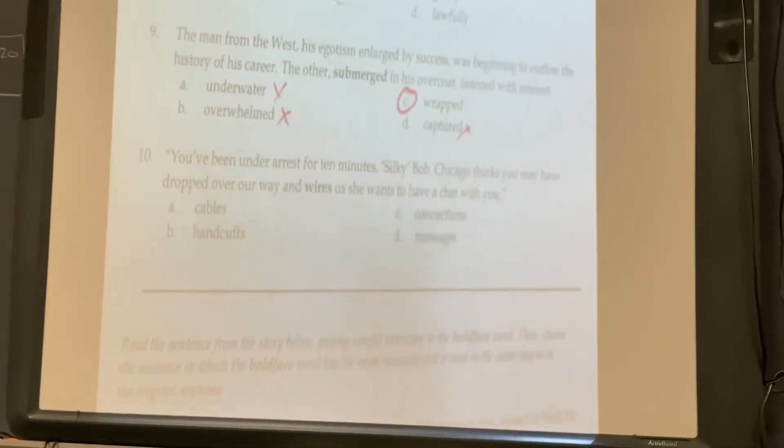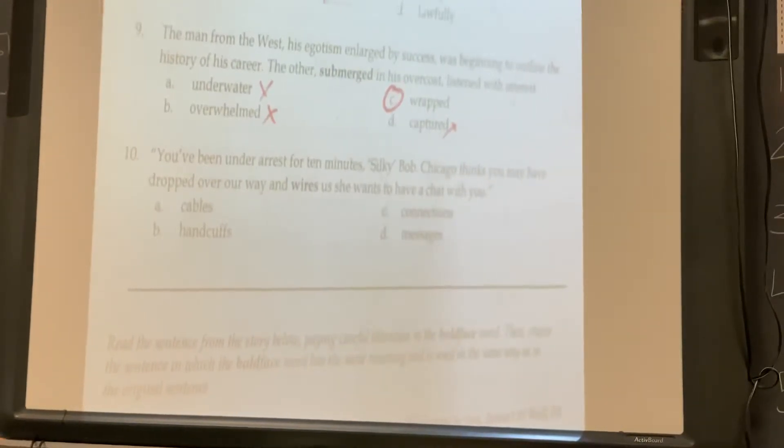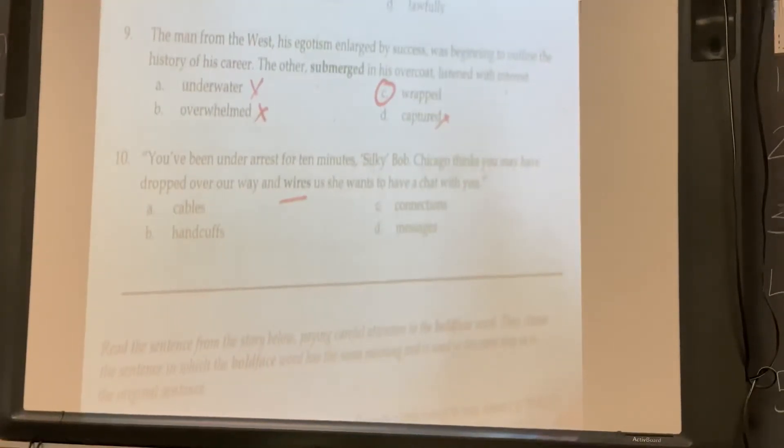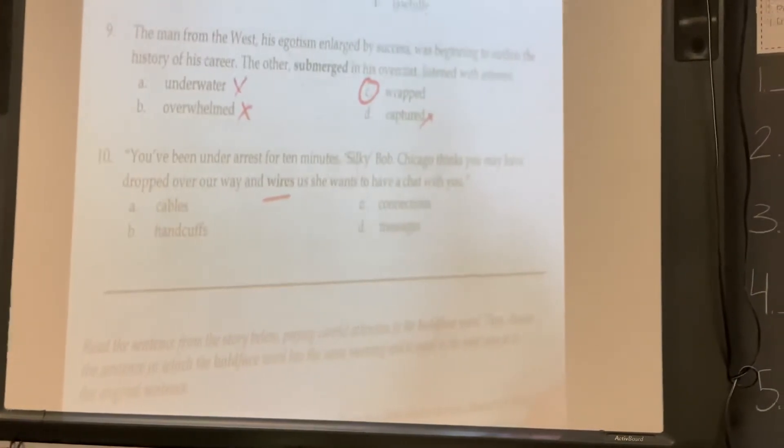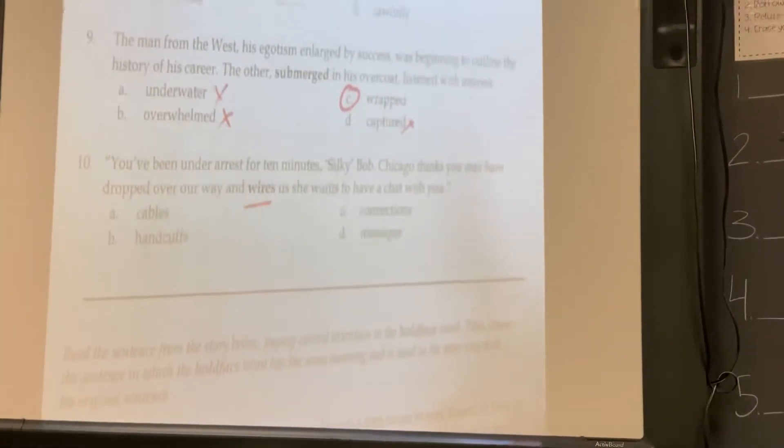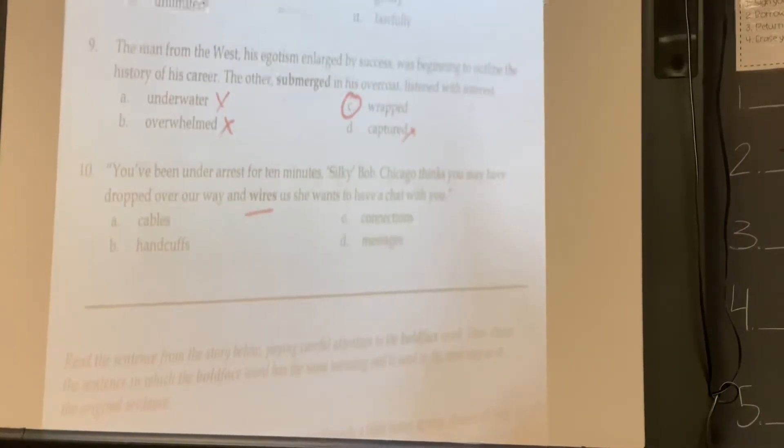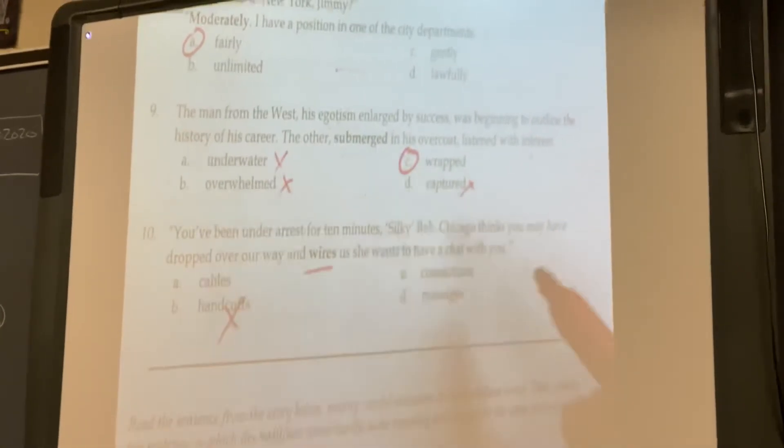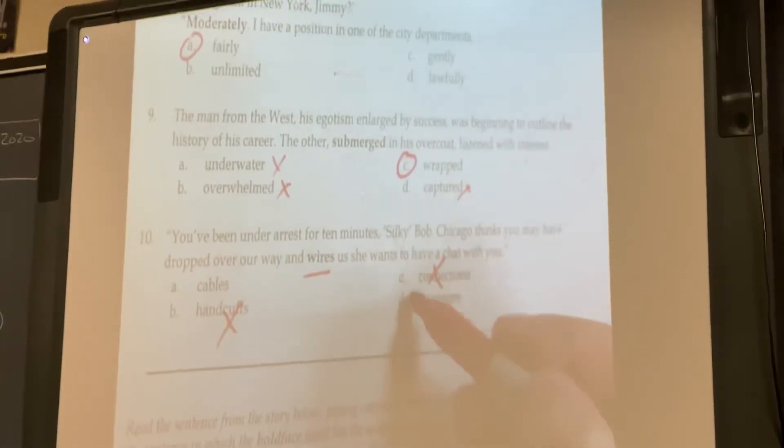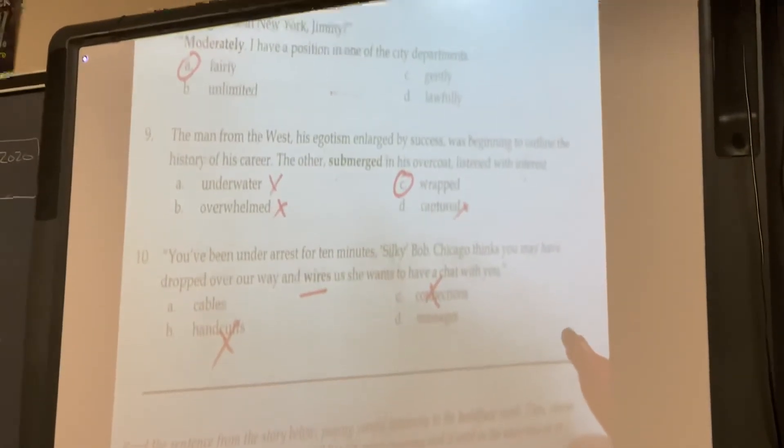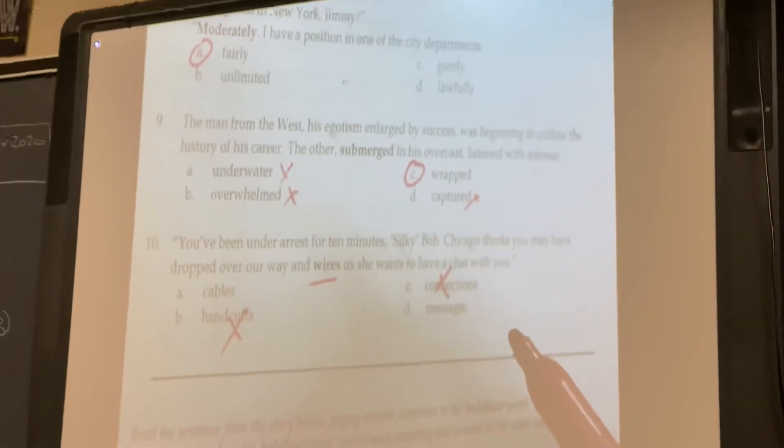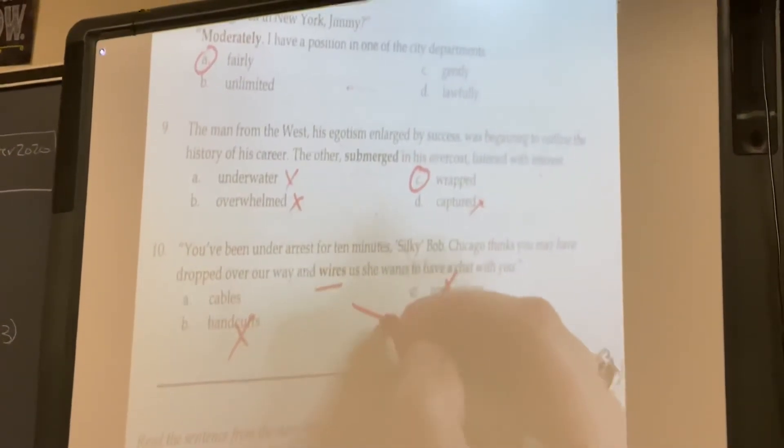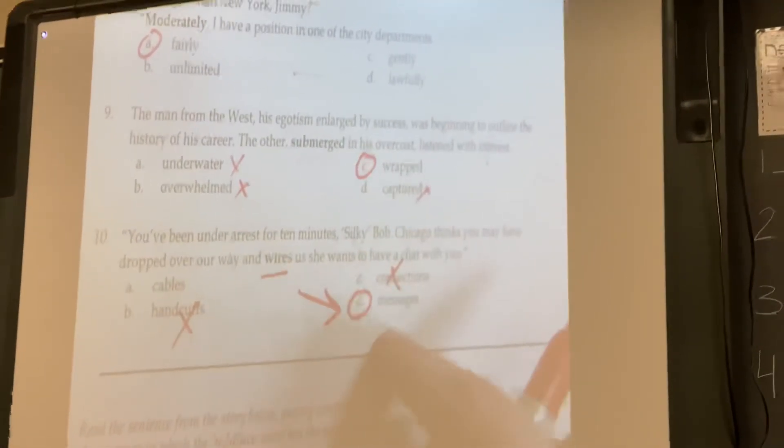Ten: You've been under arrest for ten minutes, Silky Bob. Chicago thinks you may have dropped over our way and wires us. She wants to have a chat with you. This one I thought was hard because when you wire somebody, you're cabling them a message. So I feel like the meaning, it's not handcuffs. It's not connections. It's either messages or cables. So the meaning is really message. I'm going to go with message for number ten.